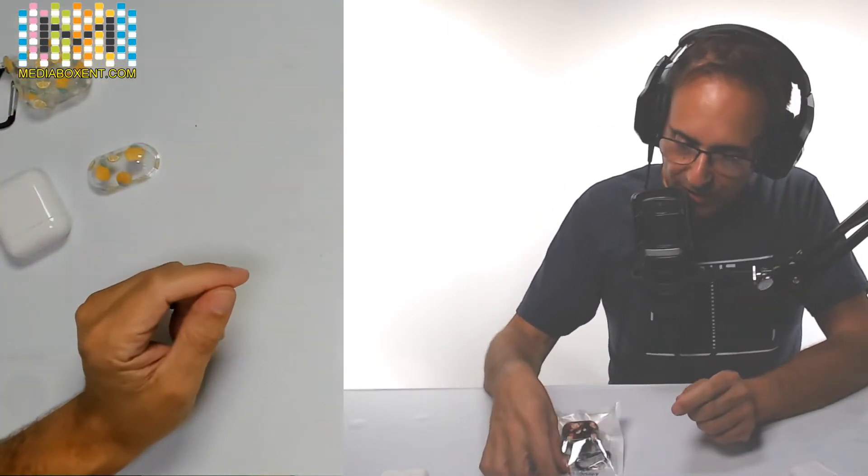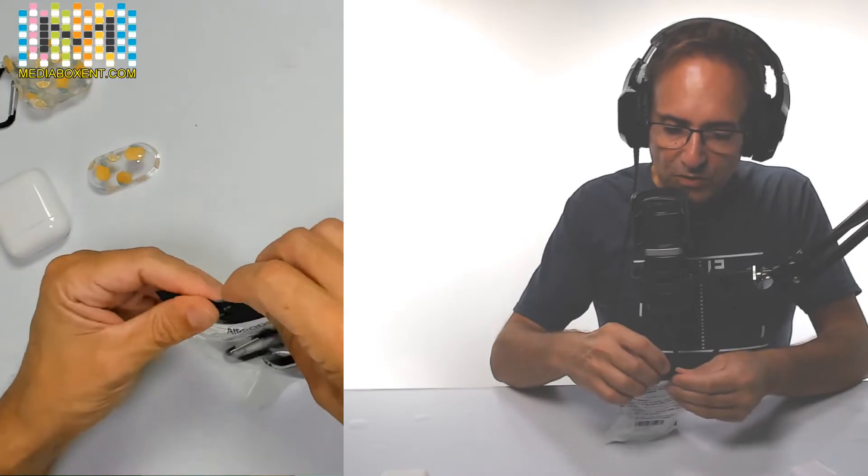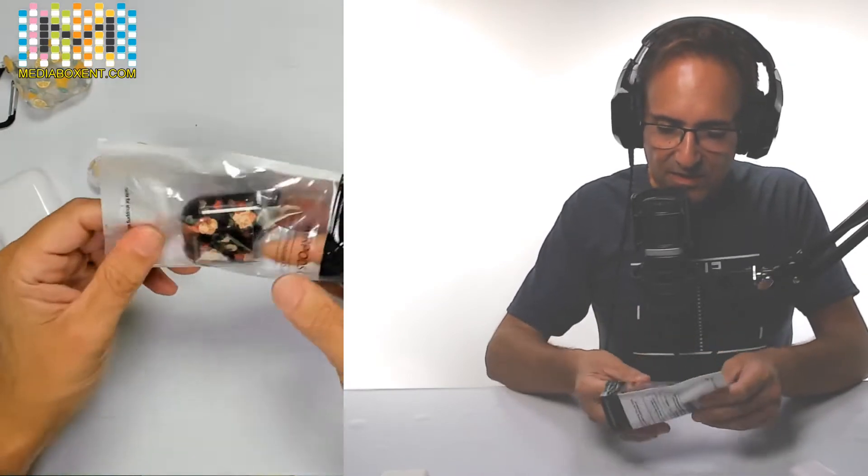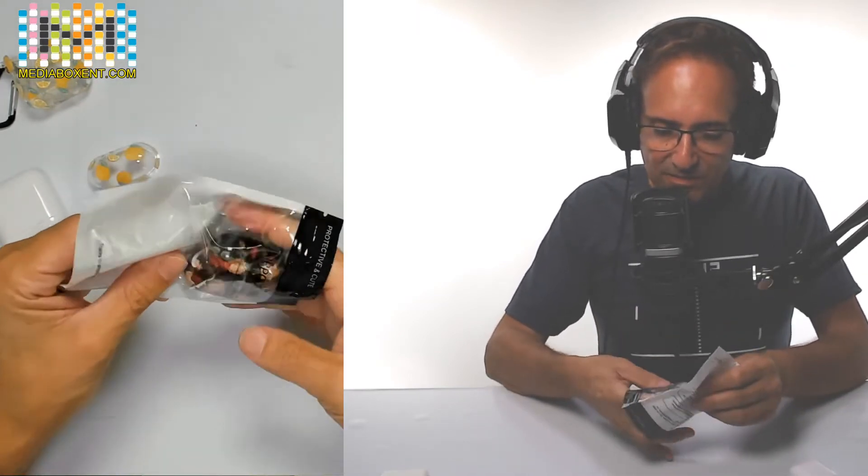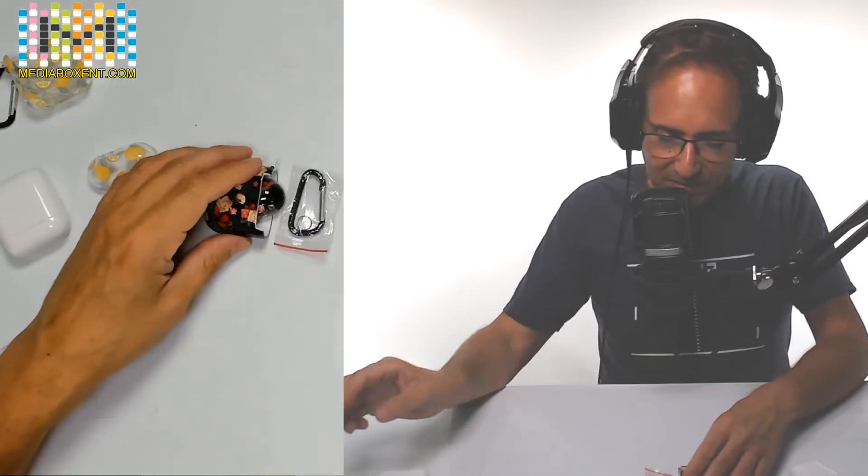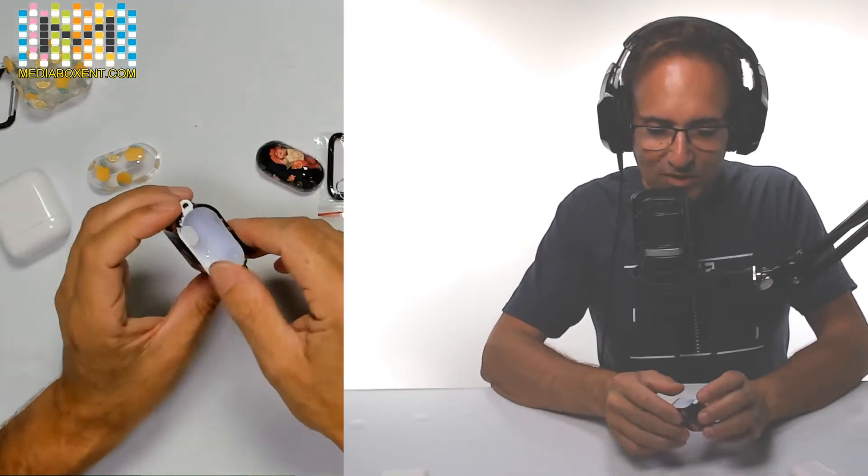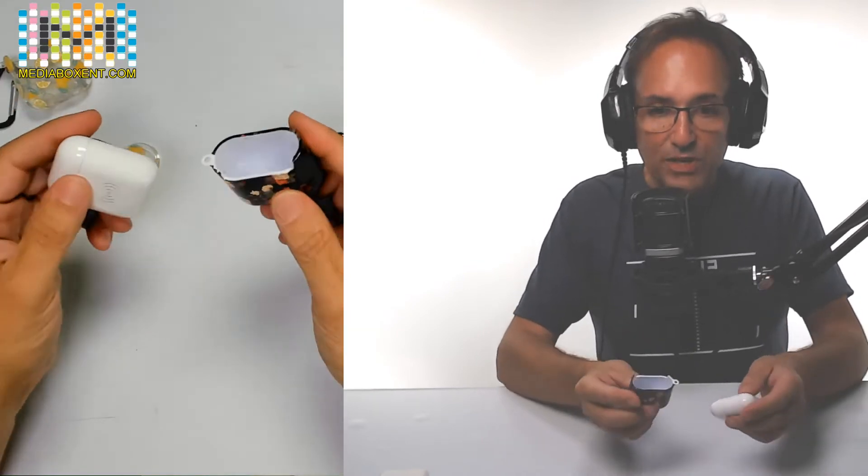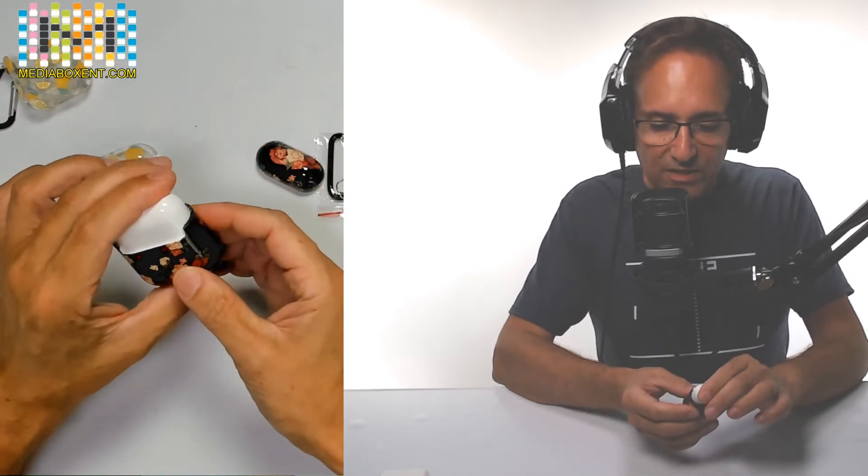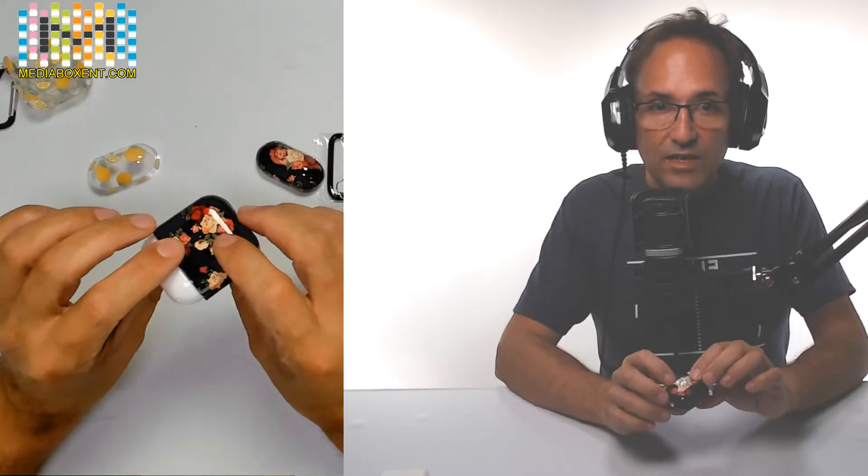You want to try the roses one - the romantic one with the red rose? That's good for Valentine's Day. You can change it every season that you like, and it's coming soon in a few months. Pretty simple - we're going to insert it. Excellent, beautiful, and it's done.